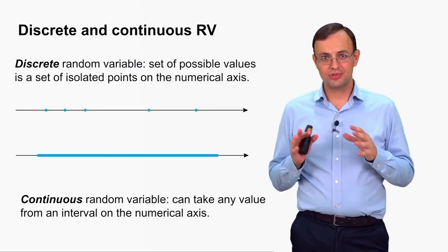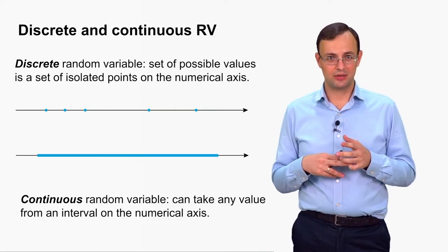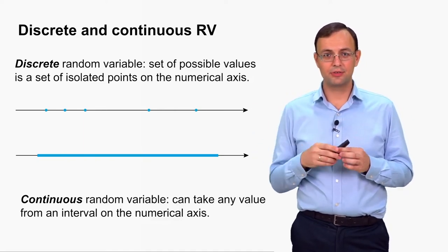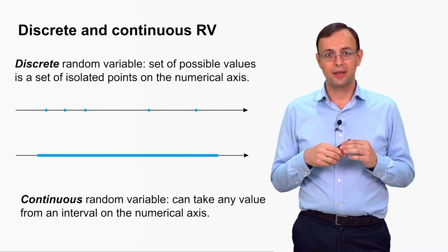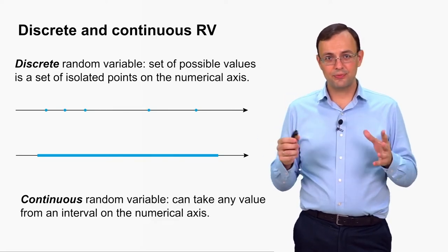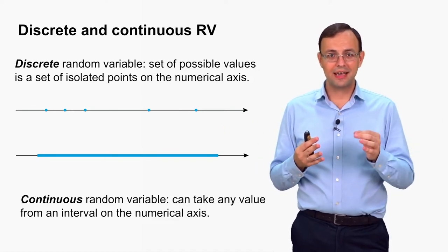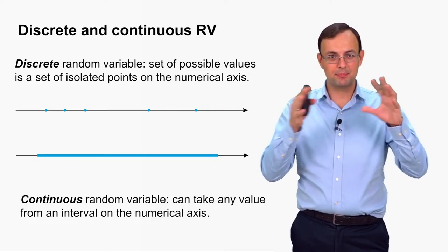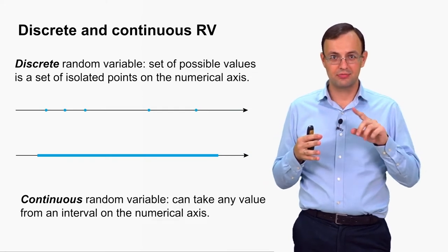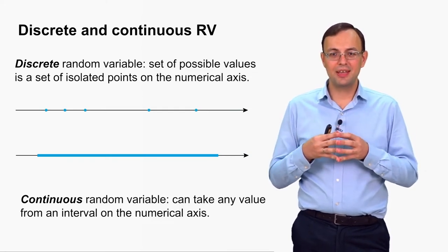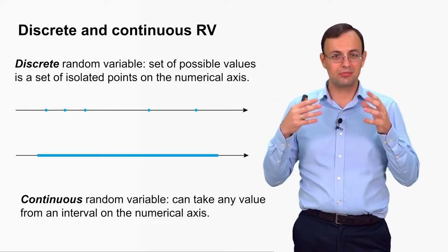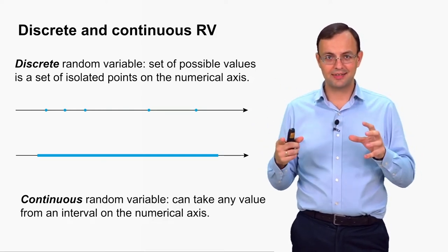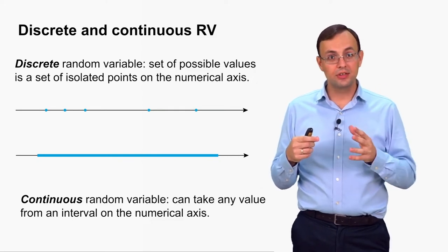There are two types of random variables: discrete and continuous. To understand the difference, we mark all possible numerical values of a random variable on the numerical axis. If this set of all possible values is a set of isolated points — we see a number of points with empty space between them — this is a discrete random variable. If we see an interval — if a random variable can take any value from some range on the numerical axis — this is a continuous random variable.